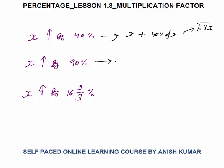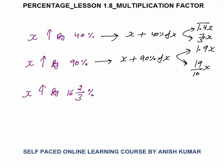Same way, x increased by 90% of x: 90% is 0.9, so this becomes 1.9x. Or in fraction form, 90% is 9/10, so x plus 9/10 x becomes 19/10 x. Also, 40% in fraction form is 2/5 — since 20% is 1/5, 40% is 2/5 — so x plus 2/5 x becomes 7/5 x. You must know both ways of conversion.